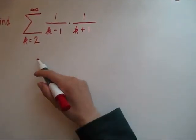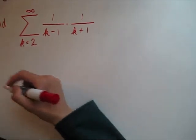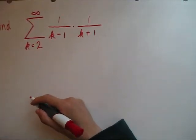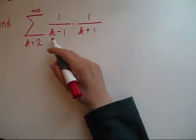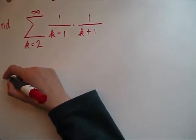We'd like to find this infinite sum. Let's write out the first few terms just to get an idea of what's happening. Notice it starts with k equals 2. If it started with 1, we'd be dividing by 0. So let's plug in 2.